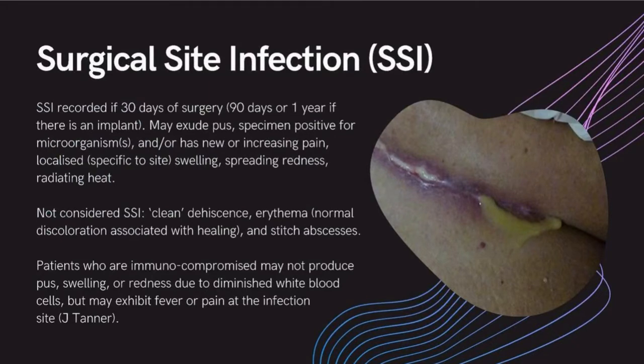By way of background, we know that SSI are an important quality indicator to patients, clinicians and policy makers. In the UK the cost of managing SSI is estimated at just over one billion pounds per annum and the complication accounts for approximately 30 percent of surgical sepsis. Some of the signs and symptoms of SSI for surveillance purposes include purulent discharge, culture likely of positive pathogen, new or increasing inflammation, wound gaping or opening on its own.